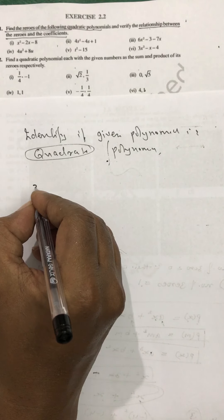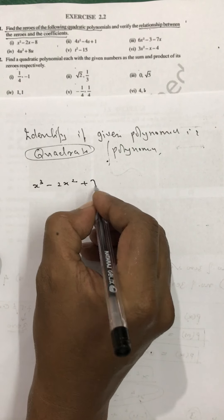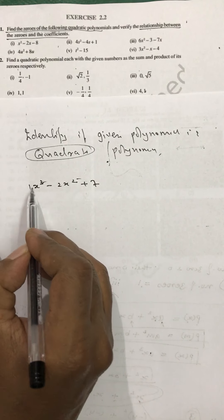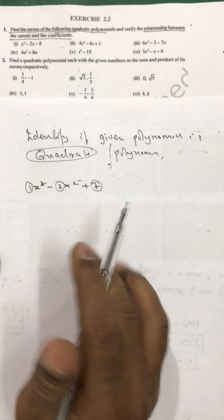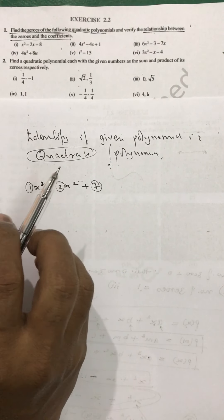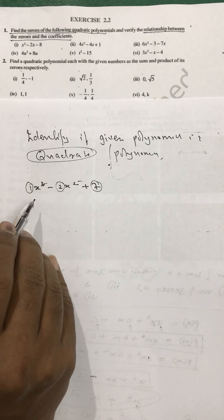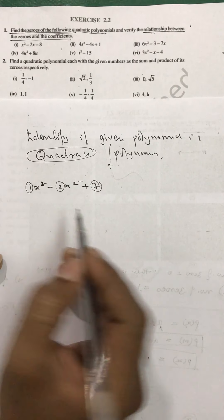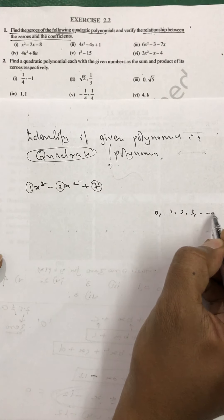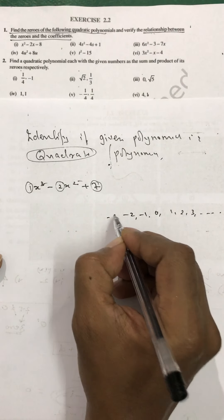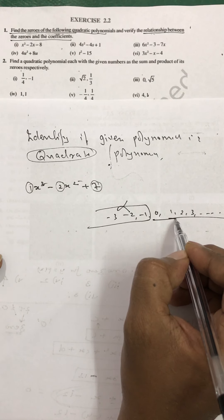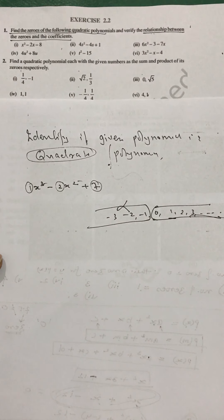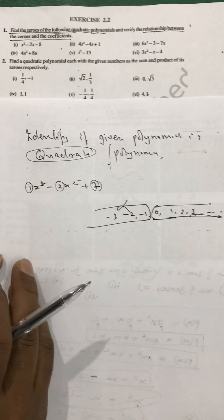For example, x cubed minus 2x squared plus 7 — the powers of the variable decide whether it is a polynomial. The coefficients like 1, 2, 7 have no role to play; they can be any numbers. The powers of the variables must be non-negative integers — that is, 0, 1, 2, 3, and so on. Any other power means the expression is not a polynomial.